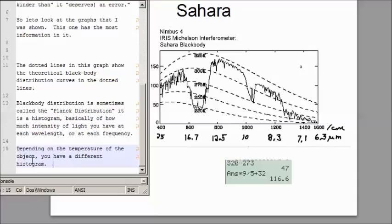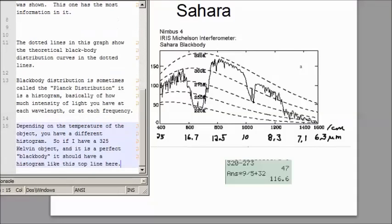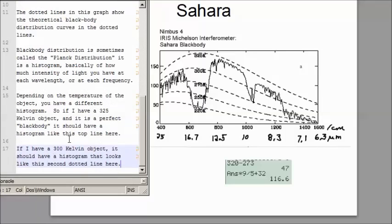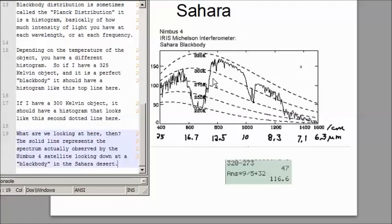Blackbody distribution is sometimes called the Planck distribution. It is a histogram of how much intensity of light you have at each wavelength or frequency. Depending on the temperature of the object, you have a different histogram. So if I have a 325 Kelvin object, it should have a histogram like the top curve here. And if I have a 300 Kelvin object, it should have a histogram that looks like the second dotted line right here.